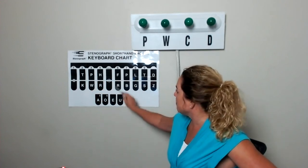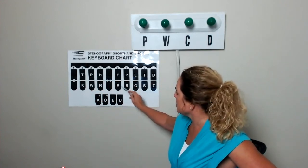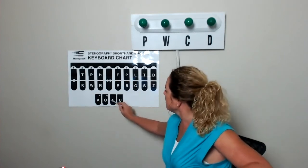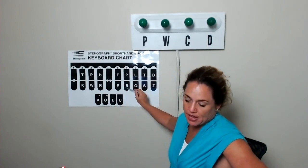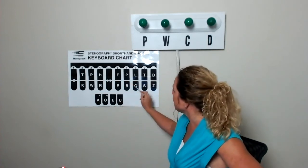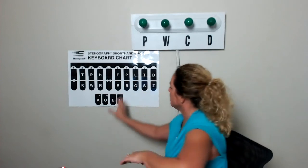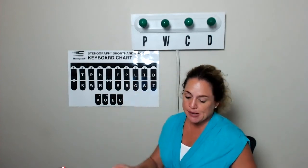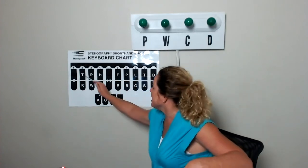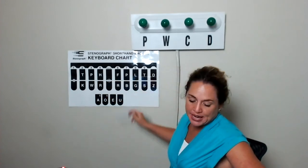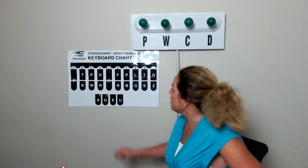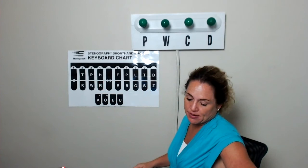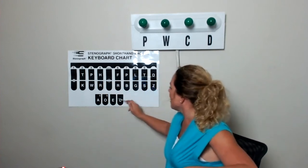Everybody, we know the brief for every is E-F-R. So everybody, we're adding the B. Everyone, E-F-R, N. Everything, E-F-R, final G. So E-F-R, final G. Anybody. So we already have a brief for any. N-I. So we're adding the B. N-I-B for anybody. Anyone. N-I, final N. Anything. N-I, final G.